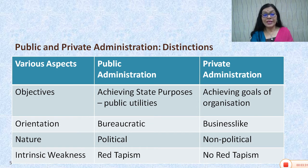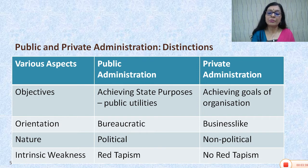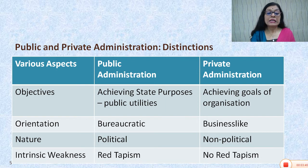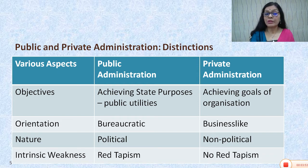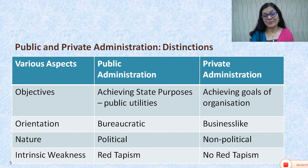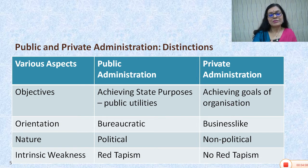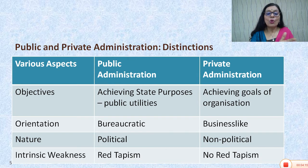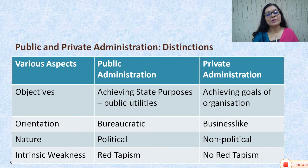In terms of nature, public administration is essentially political — it has political orientation and is part of the political process — whereas private administration is non-political. Red tapism is often cited as a major weakness of the bureaucratic model which exists in public administration, whereas in private administration there is believed to be no red tapism. Red tapism basically is the file system where files move from one table to another, with strict adherence to rules, resulting in delays. So it is considered a weakness of public administration.